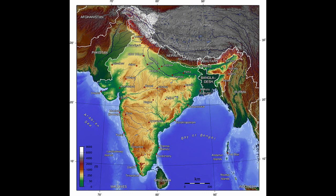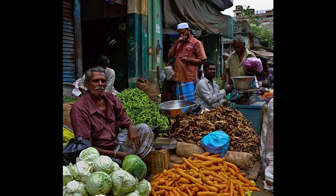Bounded by the Indian Ocean on the south, the Arabian Sea on the southwest, and the Bay of Bengal on the southeast, it shares land borders with Pakistan to the west, China, Nepal, and Bhutan to the northeast, and Bangladesh and Myanmar to the east. In the Indian Ocean, India is in the vicinity of Sri Lanka and the Maldives, while its Andaman and Nicobar Islands share a maritime border with Thailand and Indonesia.